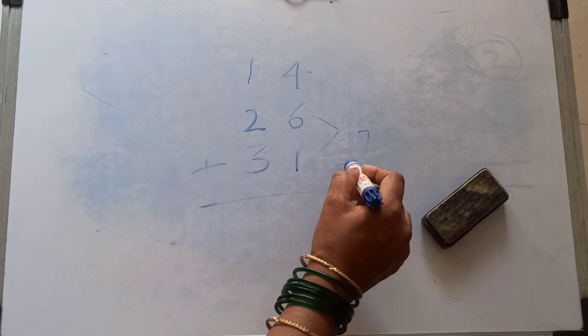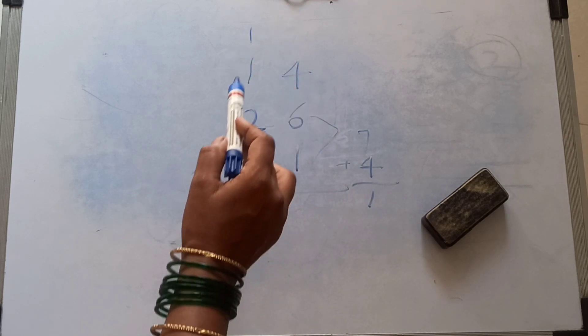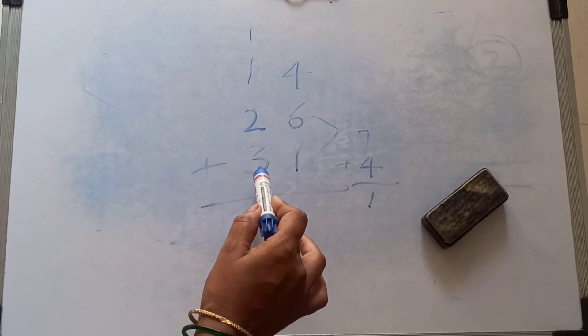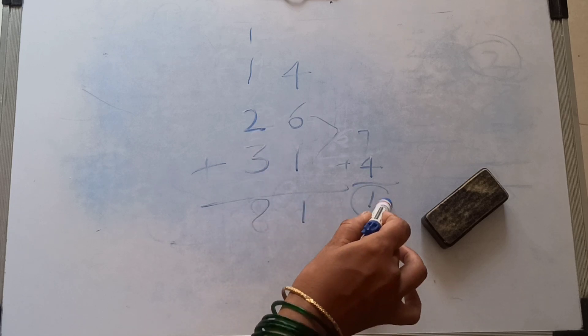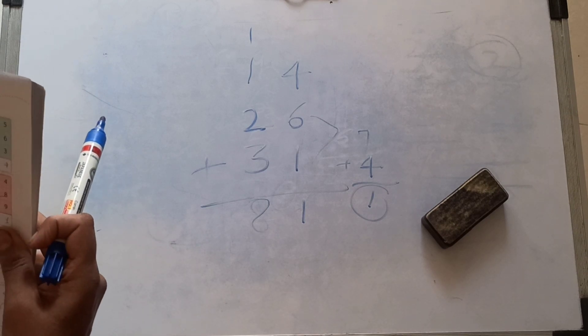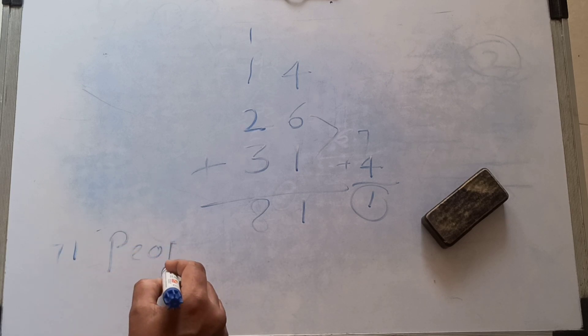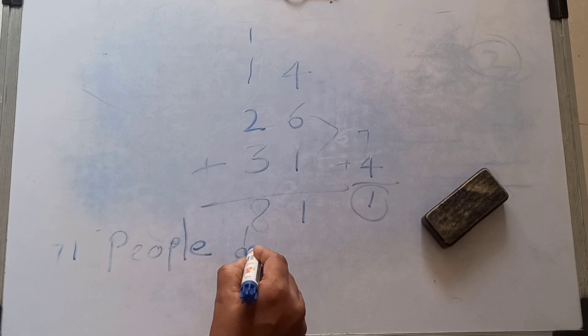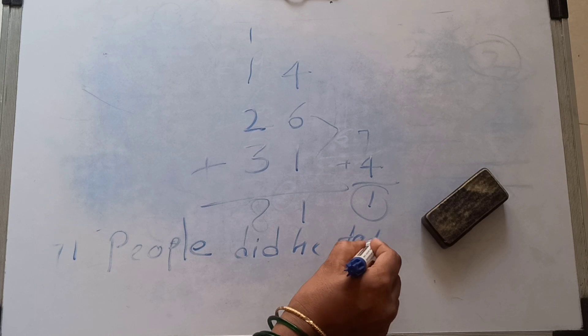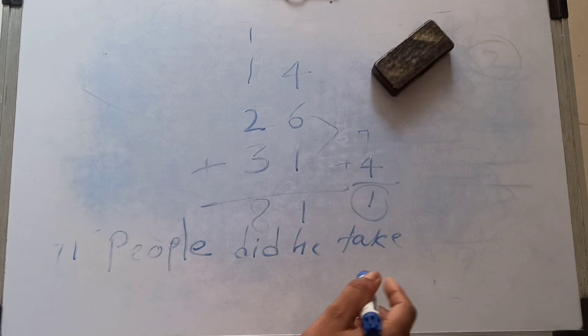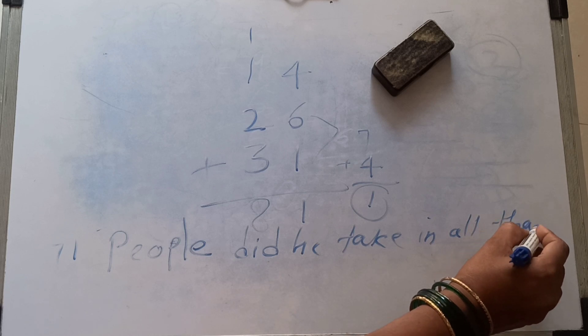6 plus 1 is 7, plus 4 is 11. One carry over. Then 1 plus 1 is 2, 2 plus 2 is 4, 4 plus 3 is 7, plus 1 is 8. Okay, means 71 people. Seventy-one people did he take in all that day.